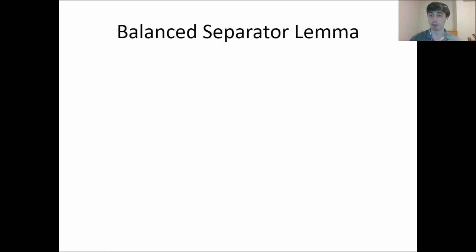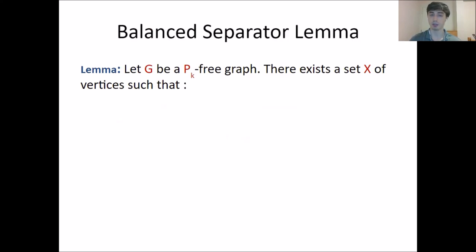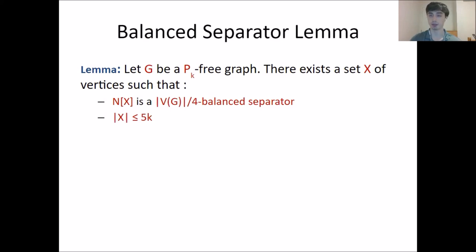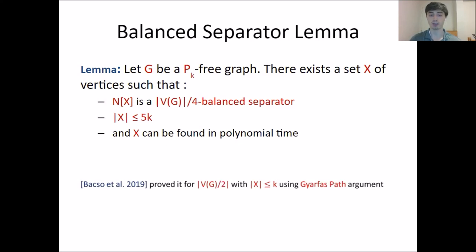We have a balanced separator lemma: if G is a PK-free graph, then there exists a set X of vertices such that the closed neighborhood of X is an N/4 balanced separator, the size of X is at most 5K, and X can be found in polynomial time. This is a simple lemma — Bożyk et al. in 2019 proved it for an N/2 balanced separator using the Gyárfás path argument, and our lemma is a straightforward extension.